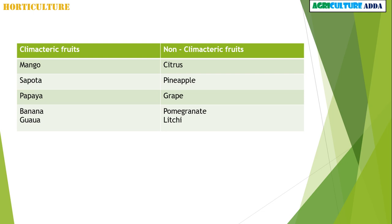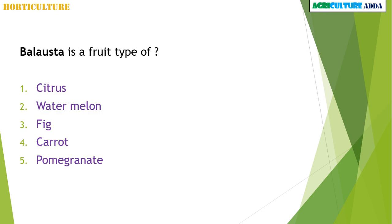Climacteric fruits include mango, sapota, papaya, banana, and guava. Non-climacteric fruits are citrus, pineapple, grape, pomegranate, and lychee. The next question is about balusta, which is a fruit type — a very frequently asked question.